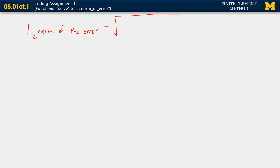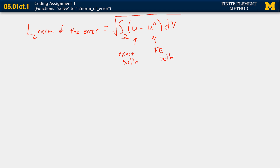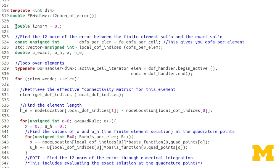The L2 norm of the error is the square root of the integral over the entire domain of your exact solution minus your finite element solution, squared — integrated over dv, though in this 1D case it's just across the x component. Here u is the exact solution and u_h is your approximate, or finite element, solution.